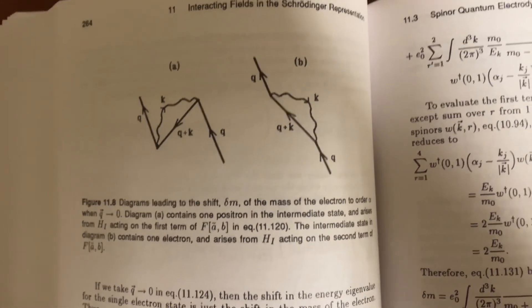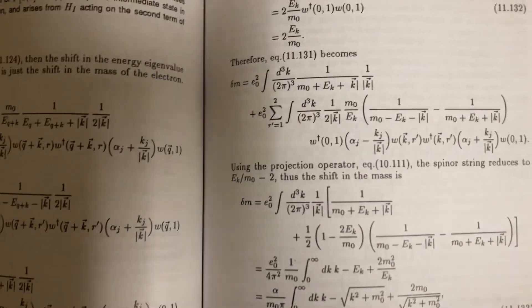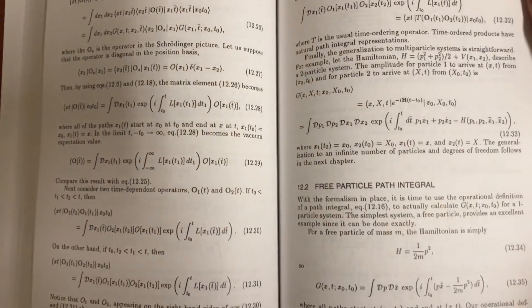So this is how electrons become positrons and stuff like that. Masses. Projection operators. It's kind of cool.